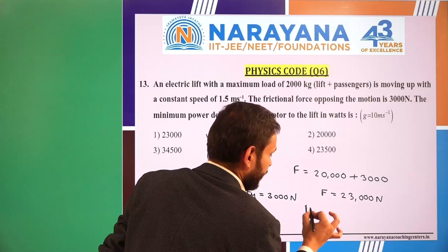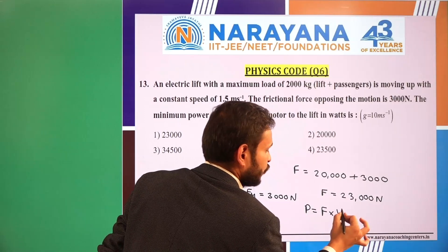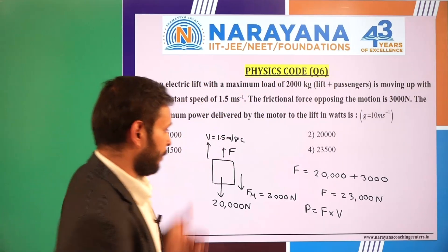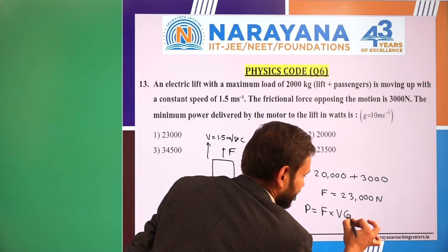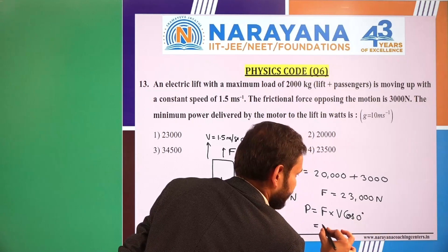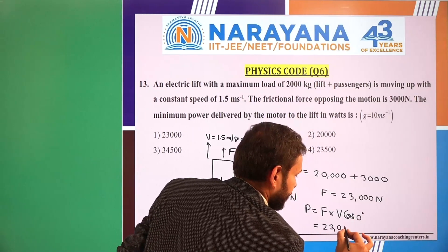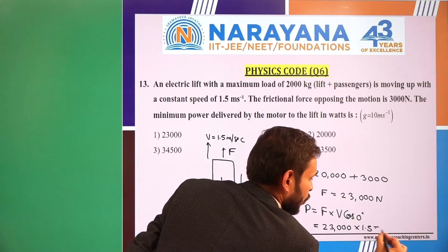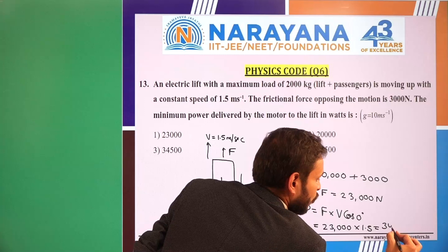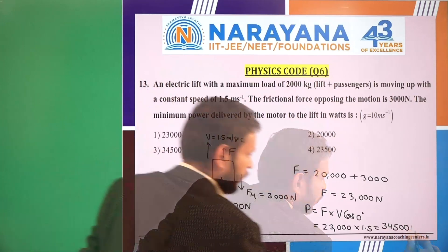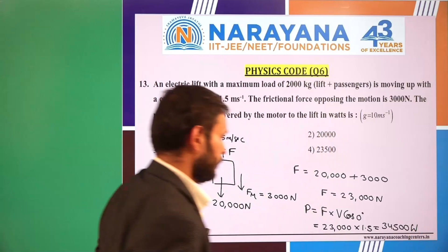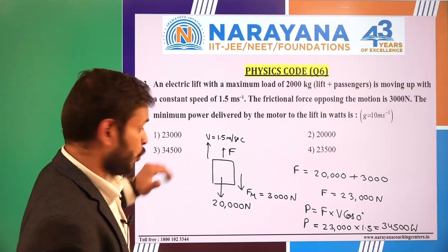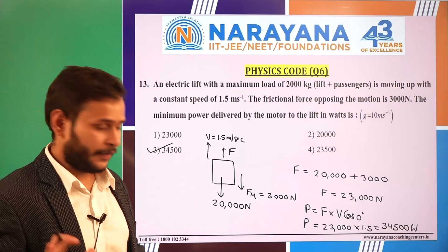For power, we directly multiply force by velocity. The net force is upward and velocity is upward, so we can write F·V·cos(0°). F is 23,000 N and velocity is 1.5 m/s, giving 34,500 watts. This is the power we get, and 34,500 W is option 3.